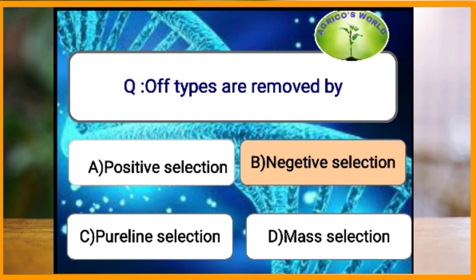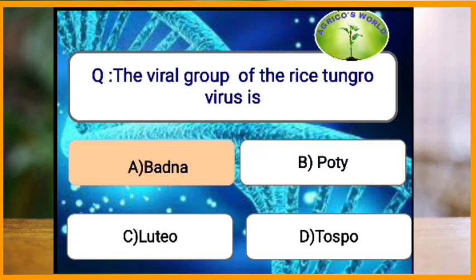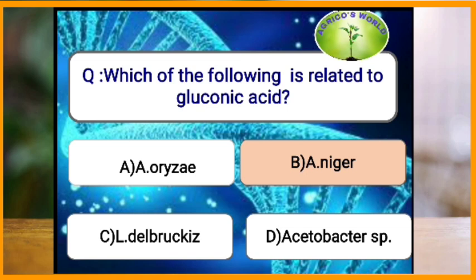Off-types are removed by which type of selection? In negative selection, the off-types are removed, whereas in positive selection, the best plants are selected. The viral group of the rice tungro virus is badnavirus. Aspergillus niger, along with Gluconobacter gluconicum and Aspergillus fumaricus, is related to gluconic acid production.